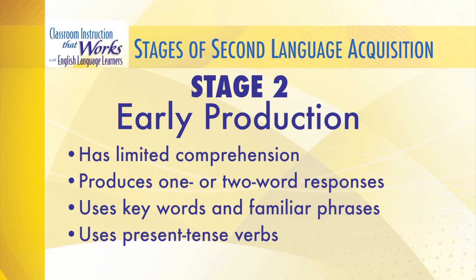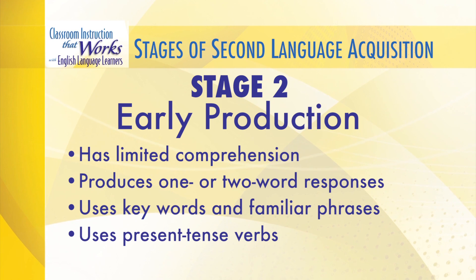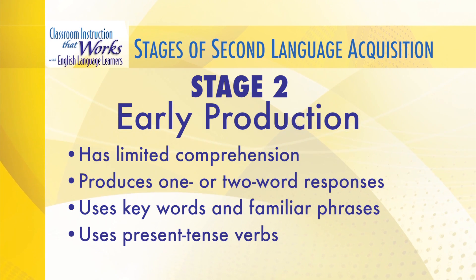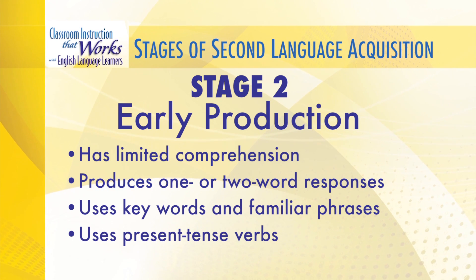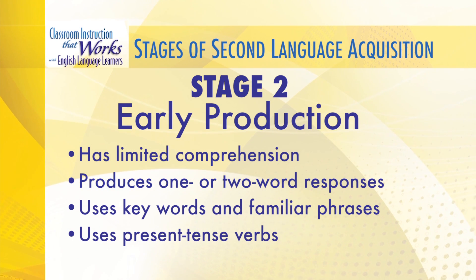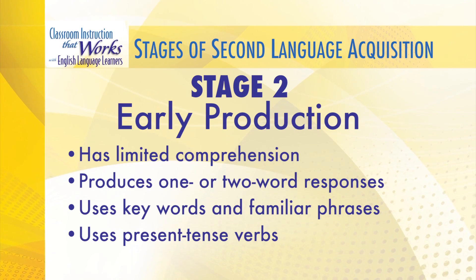Think about your own kids again in their first language acquisition. What happened next? It was around 12 to 14 months of age, and that's when your kids said their very first words. Our English language learners are going to go through a similar stage — not exact — but similar to first language acquisition in that they will start to speak, and their verbal output will be in the form of single words. We're going to refer to that stage as early production.